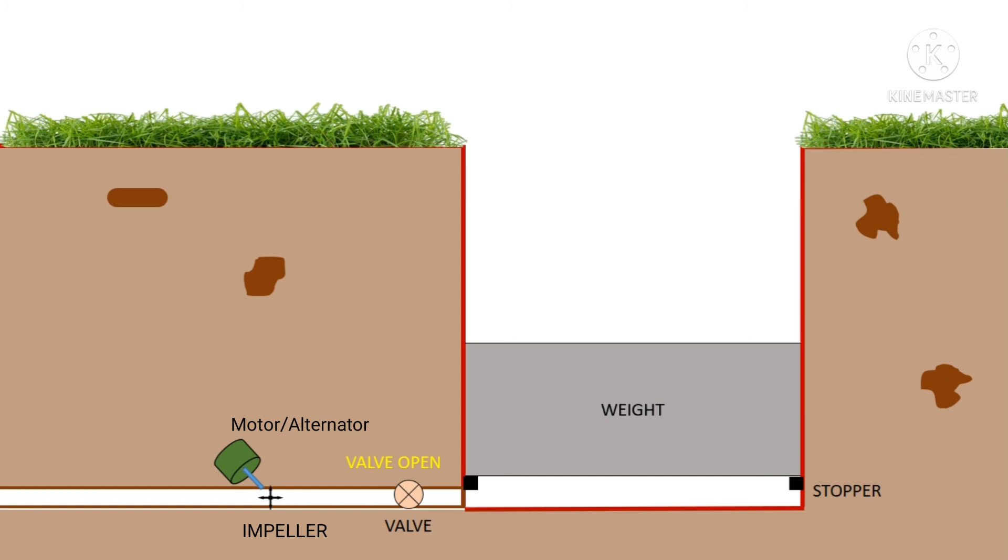At the bottom, a stopper is placed which ensures the minimum drop of the weight. If the weight is fully dropped to the bottom, it is impossible to lift the weight from the side canal.